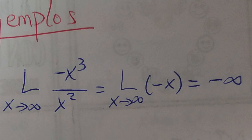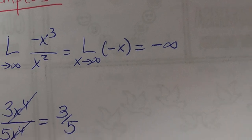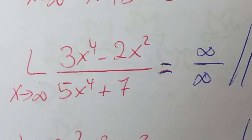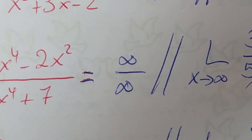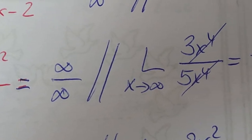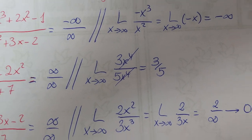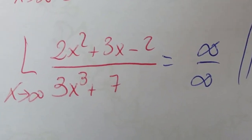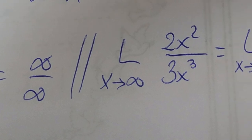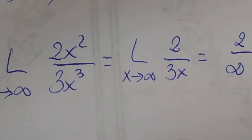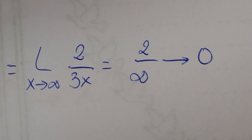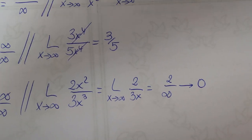Segundo ejemplo: límite cuando x tiende a infinito de (3x⁴ - 2x²) / (5x⁴ + 7). Da infinito/infinito. Cogemos las x de mayor grado: 3x⁴ partido de 5x⁴. Se van las x⁴ y nos quedarían 3/5. Y por último, el límite cuando x tiende a infinito de (2x² + 3x - 2) / (3x³ + 7). Cogemos 2x² partido de 3x³, nos quedaría 2/(3x), que sería 2/infinito, que tiende a 0.